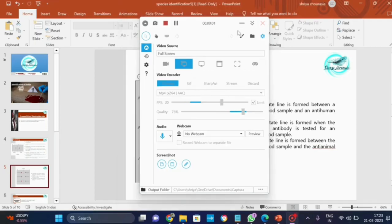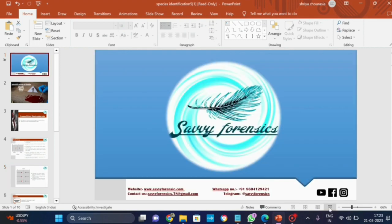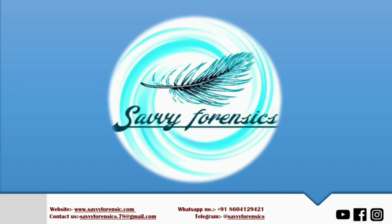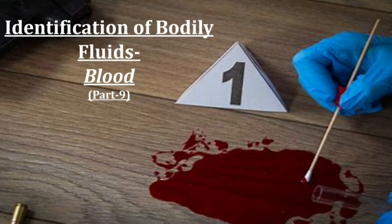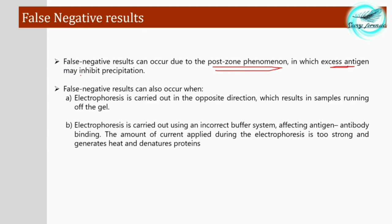There are certain cases where false negative results can occur. The first is the post-zone phenomenon, where an excess of antigen in the sample inhibits the precipitation process. This is one reason why you should not apply stained material directly — you should first extract it using distilled water or saline.